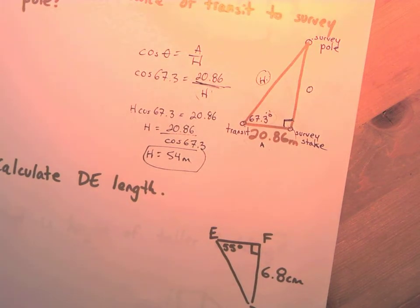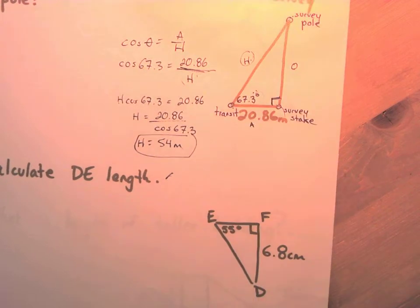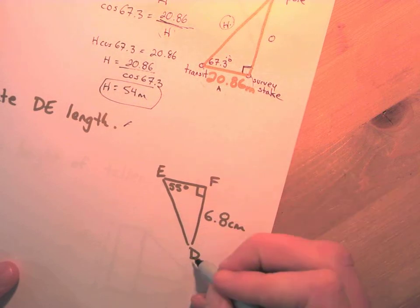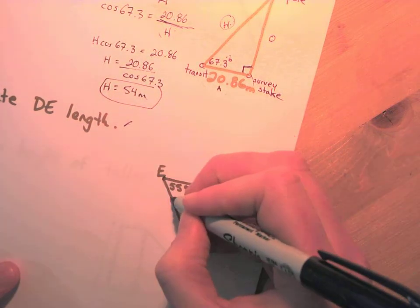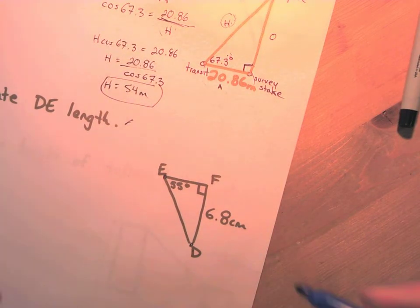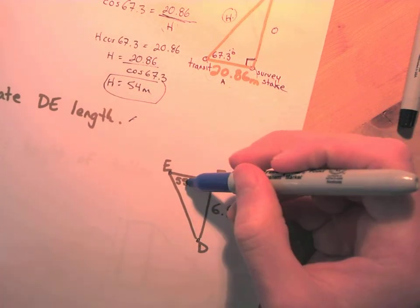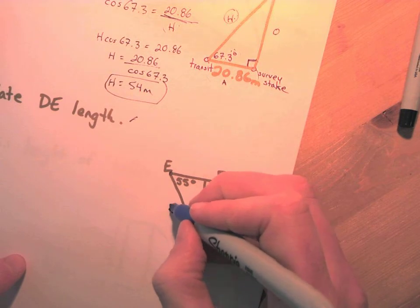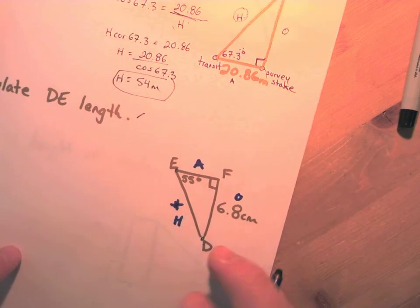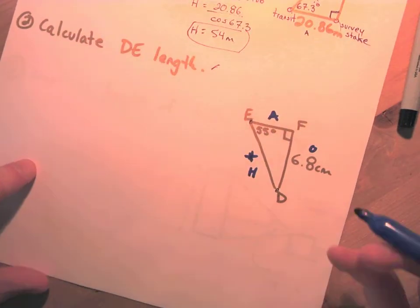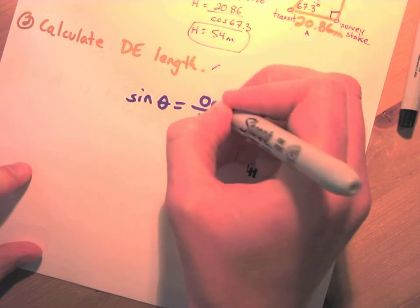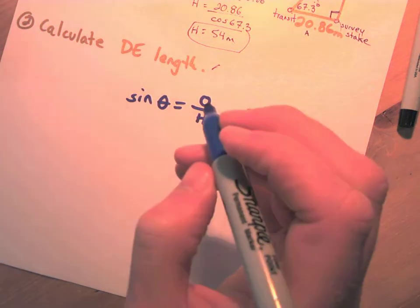The last question for section five: calculate DE length for this triangle. DE means from D to E, so we want the length of that line. We have 55 degrees. Labeling the triangle from that 55° angle: H is the hypotenuse, O is opposite, A is adjacent. We want H and we know O, so we'll use sine: sin θ = O/H.